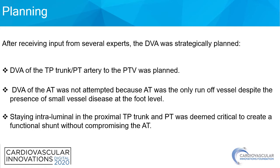DVA of the TP trunk or PD artery to the posterior tibial vein was planned. DVA of the AT was not attempted because AT was the only runoff vessel despite the presence of small vessel disease at the foot level, which we didn't want to compromise. Staying intraluminal in the proximal TP trunk and PT was deemed critical to create a functional shunt without compromising the AT.